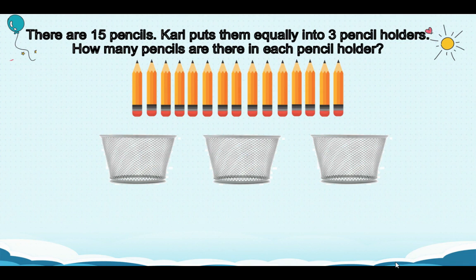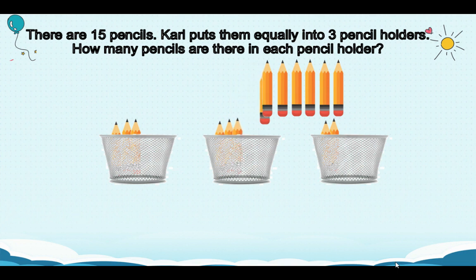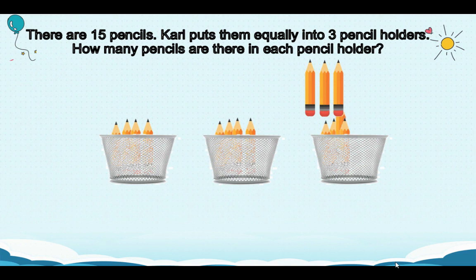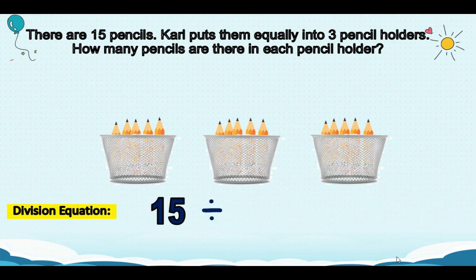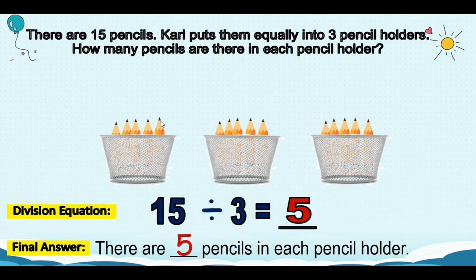How about this? There are 15 pencils. Carl puts them equally into 3 pencil holders. How many pencils are there in each pencil holder? Let's distribute the pencils — 1 through 15. Here's the division equation: 15 divided by 3 equals how many pencils are there in each pencil holder? 1, 2, 3, 4, 5. So, 15 divided by 3 equals 5. There are 5 pencils in each pencil holder.